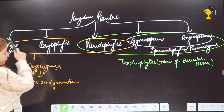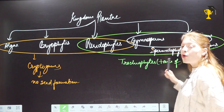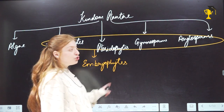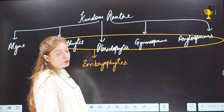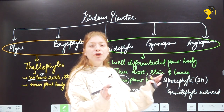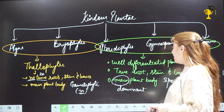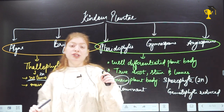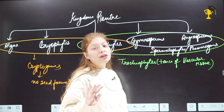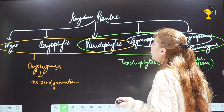So algae, bryophytes, and pteridophytes are cryptogams. Gymnosperms and angiosperms are also called spermatophytes. From bryophytes to angiosperms they are called embryophytes or archegoniophytes because they have archegonia. Algae and bryophytes have the gametophytic phase as the dominant phase with thallus organization, while pteridophytes, gymnosperms, and angiosperms have a well-differentiated body into true root, stem, and leaf — their main plant body is sporophytic.